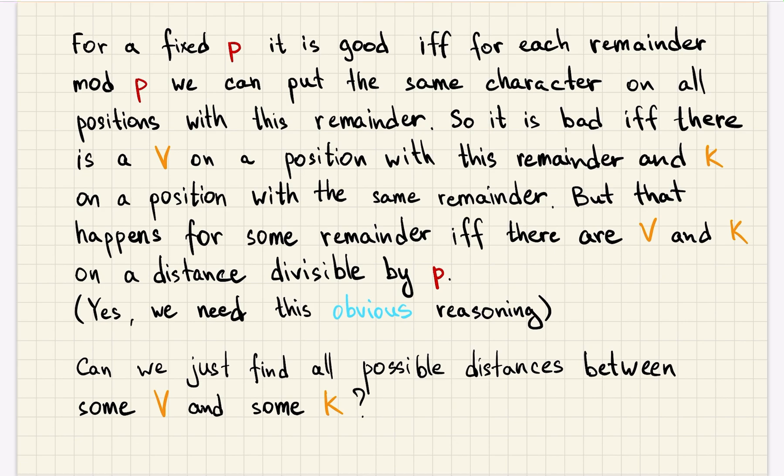So we need to prove that if there are no such pair of characters then this p is good, and this reasoning explains it. Can we just for all possible distances check if there are pairs of v and k that are already in the string and on this given distance?